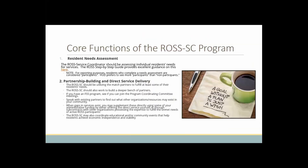Thinking about some of the core functions of the Ross program — the resident needs assessment is so important because this is something you did even before you were funded. This gives you a platform, a foundation, in terms of understanding what services and needs your residents have. The other aspect of the Ross program is partnership building. When you submitted your grant, we asked you to include a 25% match. These partners are individuals who pledged to support you over your three-year grant period, and it's important for you to continue to rely on these individuals and go back to them to give you the support they committed to your Ross program.